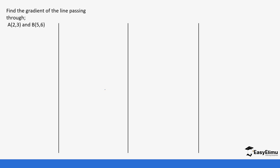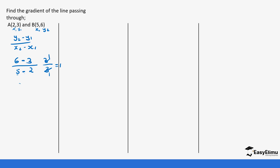Let's do another question: find the gradient of the line passing through A(2, 3) and B(5, 6). We assign x1 = 2, y1 = 3, x2 = 5, y2 = 6. So it's y2 minus y1 over x2 minus x1: 6 minus 3 over 5 minus 2, giving 3 over 3 = 1. The gradient is 1.